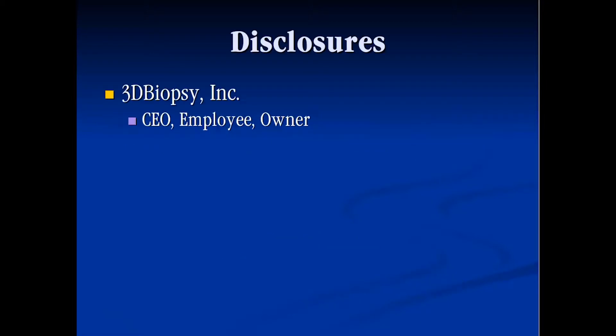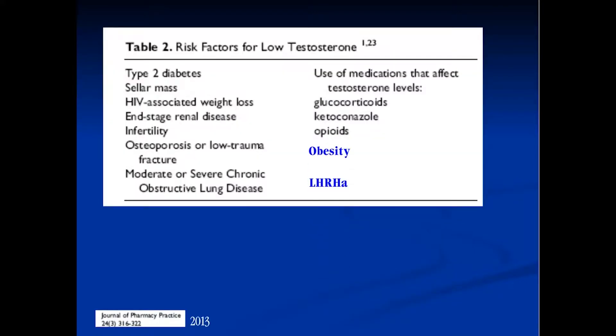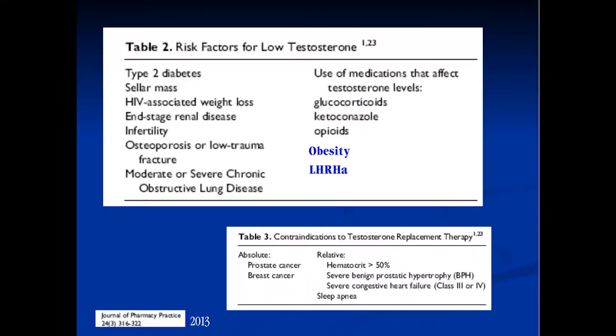Just to review a little bit about the hormonal axis: the anterior pituitary-hypothalamic axis produces luteinizing hormone, which stimulates the interstitial cells to produce testosterone. We're all aware of that feedback mechanism with LH and testosterone, as opposed to FSH which stimulates the Sertoli cells to produce sperm, and that feedback mechanism is with inhibin.